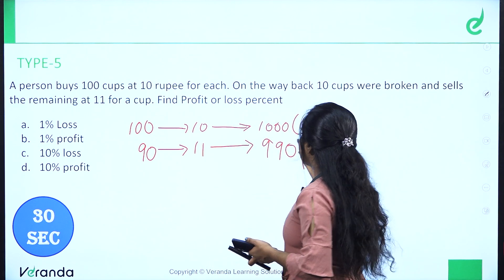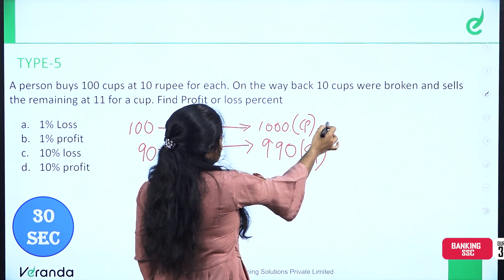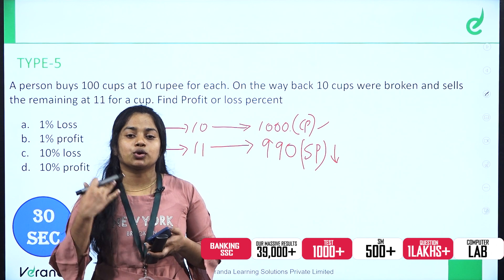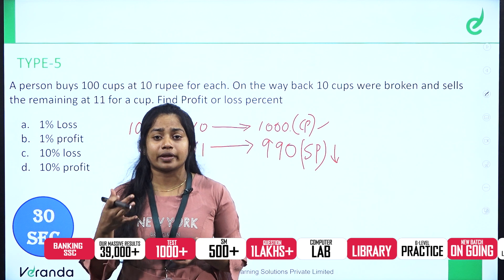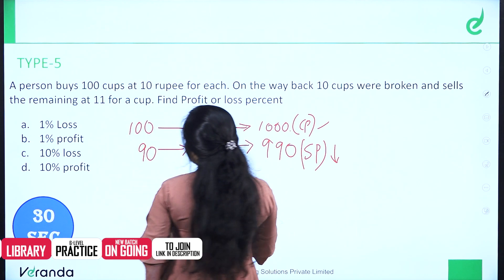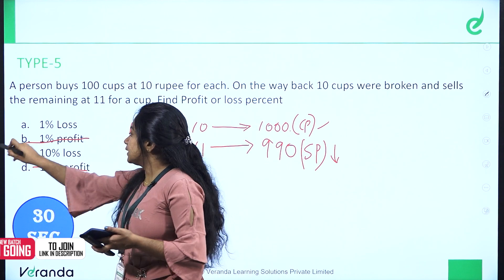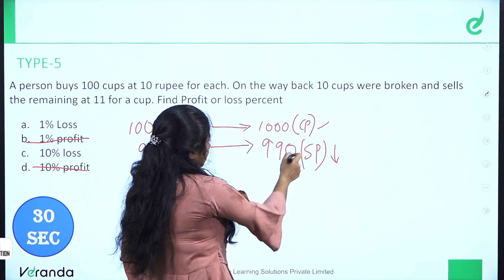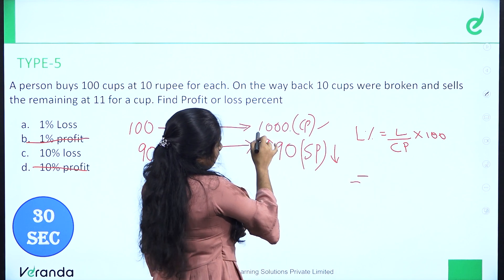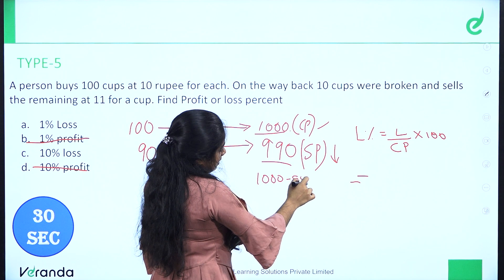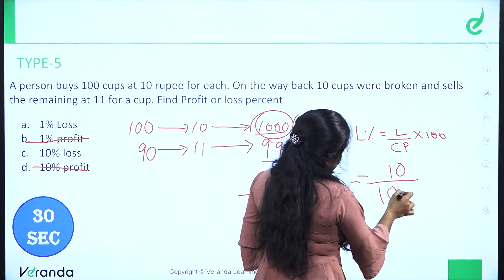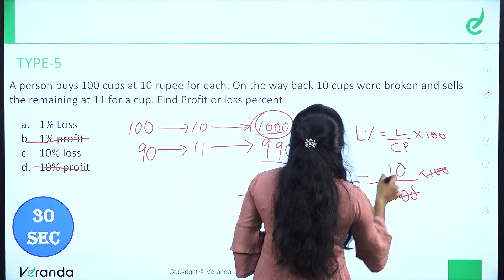The selling price is 990 rupees. Now we have the cost price and the selling price. The selling price is less than the cost price, so there is a loss. The loss is cost price minus selling price: 1000 minus 990 equals 10 rupees. The cost price is 1000 rupees. Loss percentage is 10 divided by 1000 into 100, which gives us 1% loss.